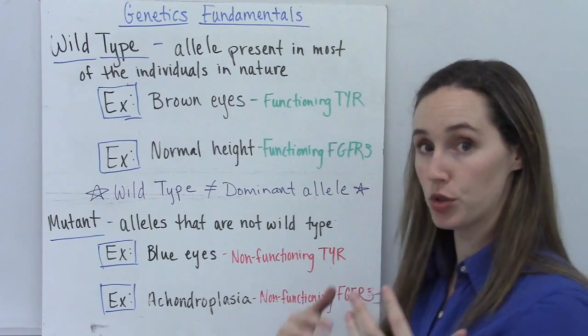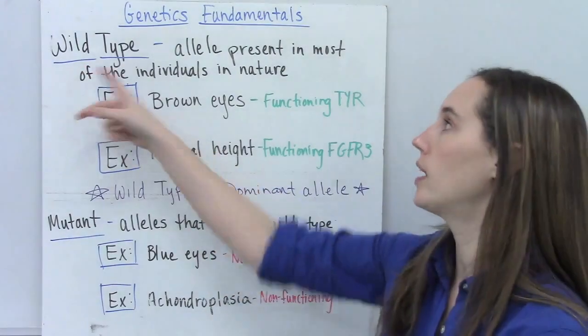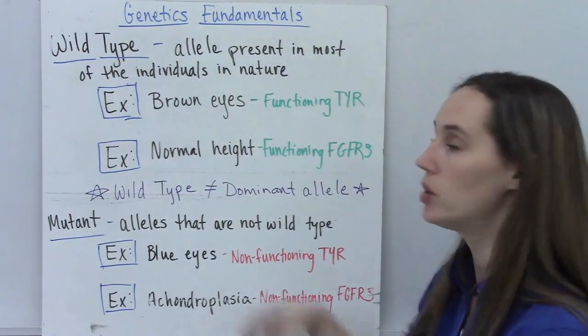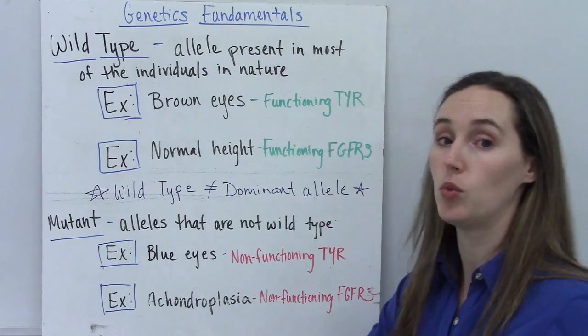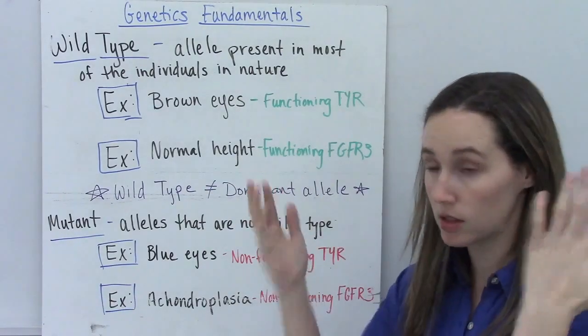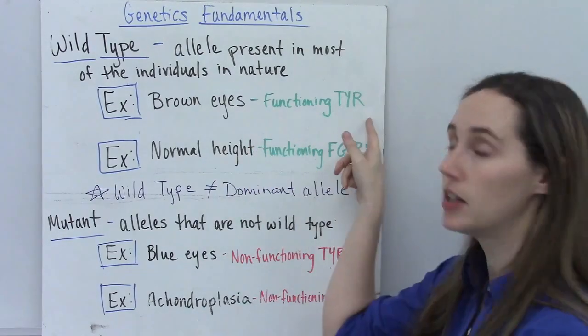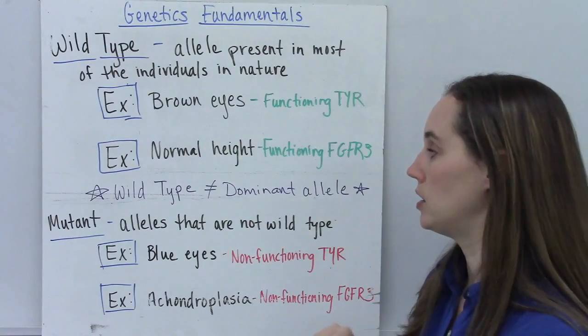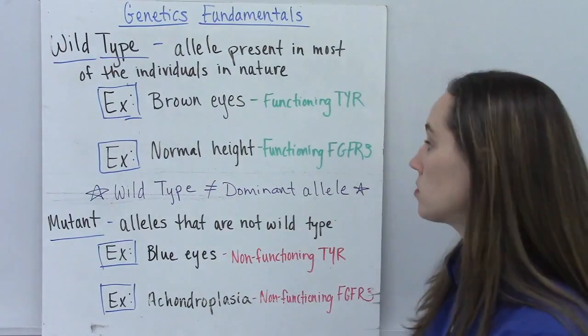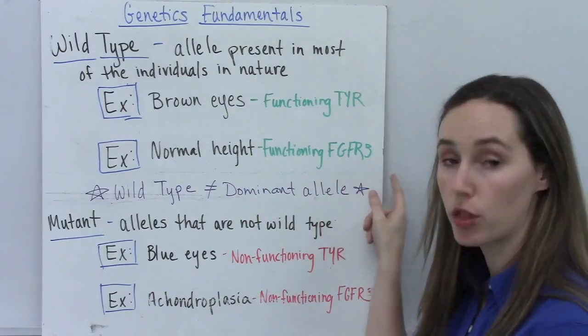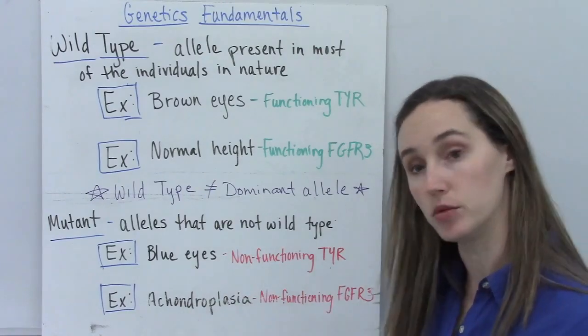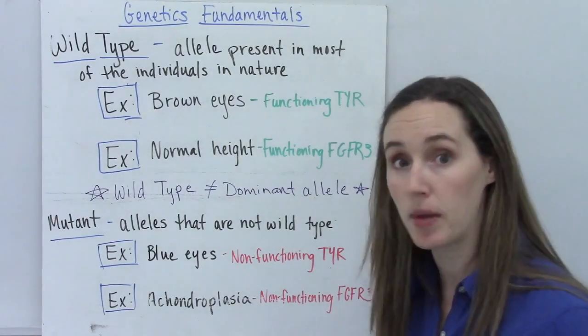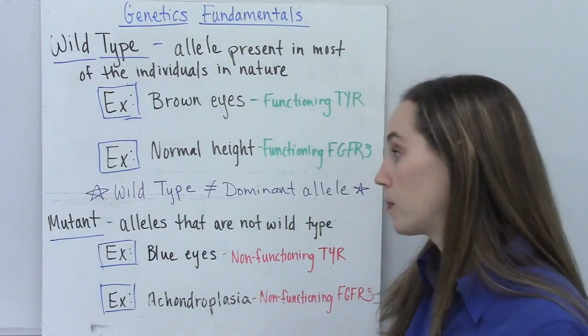There are different types of alleles that show up in nature. The major allele that you see in nature is called the wild type. So if you are looking at nature, most of the individuals will have whatever. So for example, in humans, brown eyes is the wild color for eyes because those folks have a functioning TYR gene that makes melanin, so they have brown eyes. Another example of a wild type allele is normal height in humans, and that's because we have a functioning FGFR3 gene. This is important for growth and maintenance of your bones.